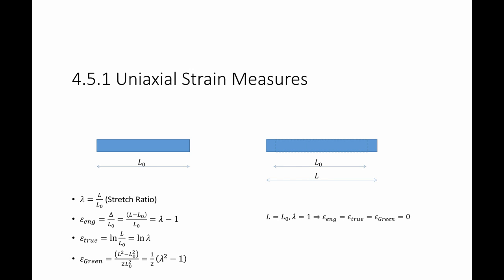There's one thing common about all these strain measures. If L is equal to L0 which means that lambda is equal to 1, all these strain measures are going to give me zero strain.